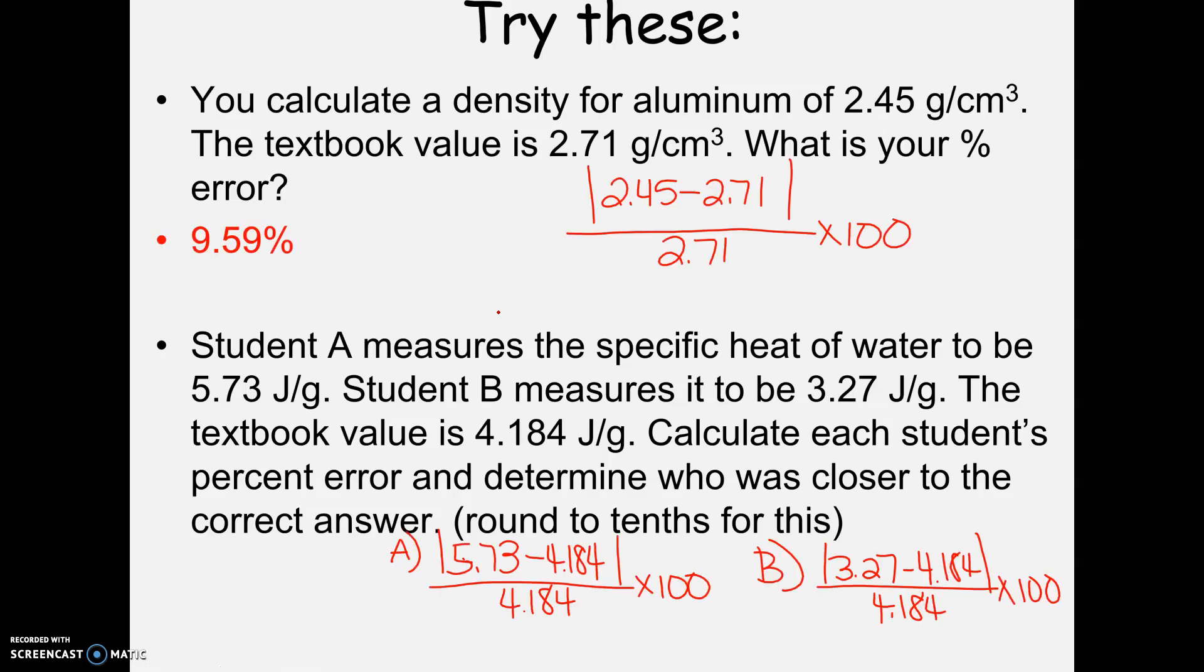Okay, so I've put up my work for both of the problems. So if we look at our first problem, I plugged it in. Then, again, if you plug this into your calculator, I always make it a point to hit enter in between steps, just to make sure, because some calculators do funny things. So I don't put all of this in at once. I put in the 2.45 minus 2.71 and hit equals, and then take that answer.